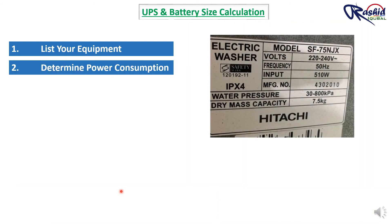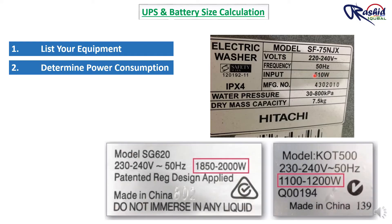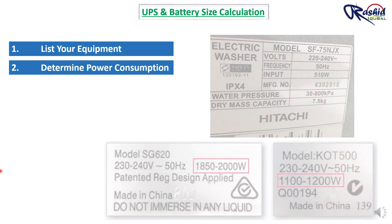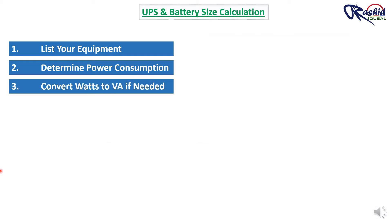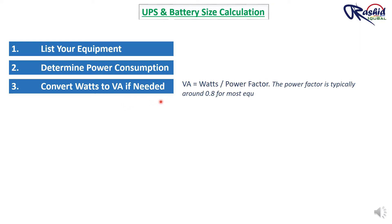Second, determine power consumption. Look at the power rating of each device, usually found on the device label or in the user manual. This rating is usually given in Watts or Volt-Amperes. Third, convert Watts to VA if needed. If the power rating is given in Watts, you can convert it to Volt-Amperes.